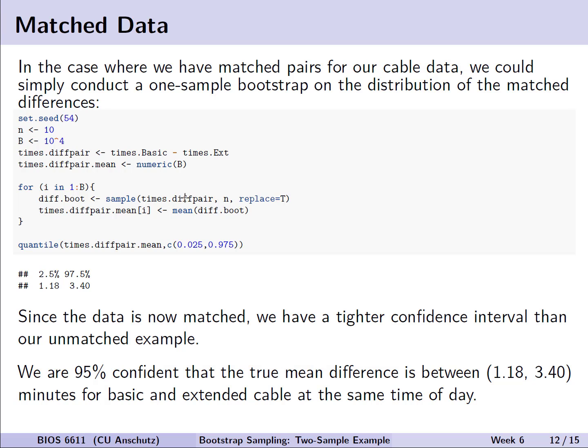So let's shift gears slightly to consider the case of matched data. In the case where we have matched pairs for our cable data, for example, we could simply conduct a one-sample bootstrap on the distribution of those matched differences. So here we see our code example implementing that bootstrap we saw in the previous lecture, where now we just calculate a new vector of length 10, just taking the times for basic and extended cable, assuming they're matched between each other.